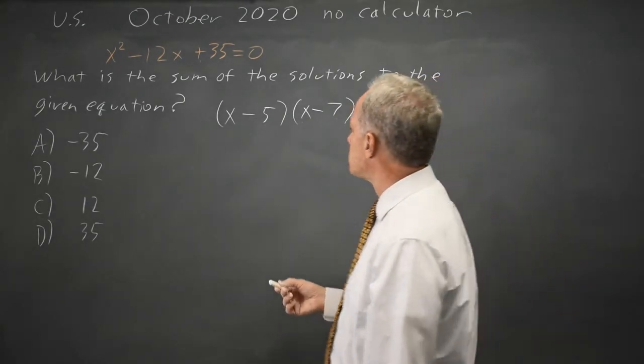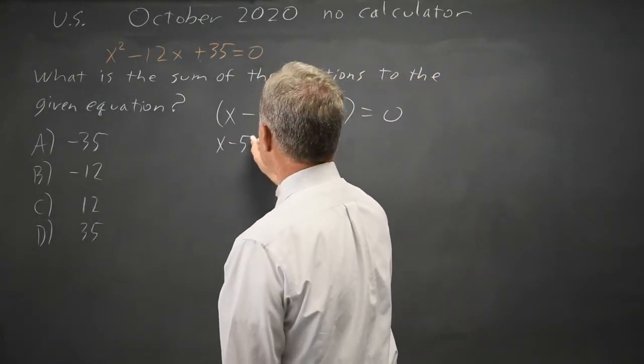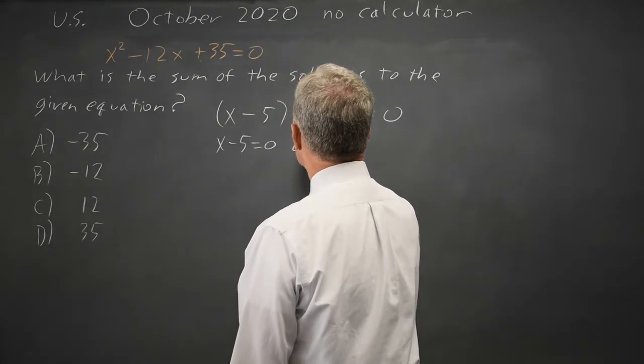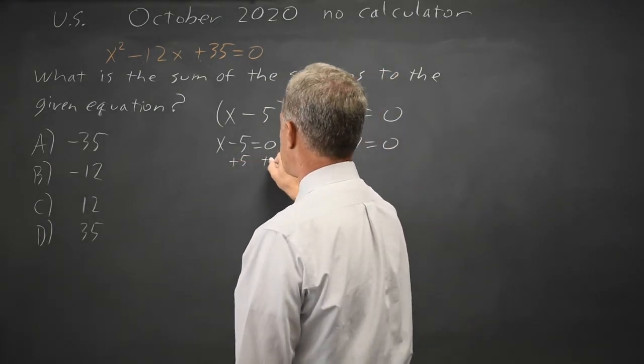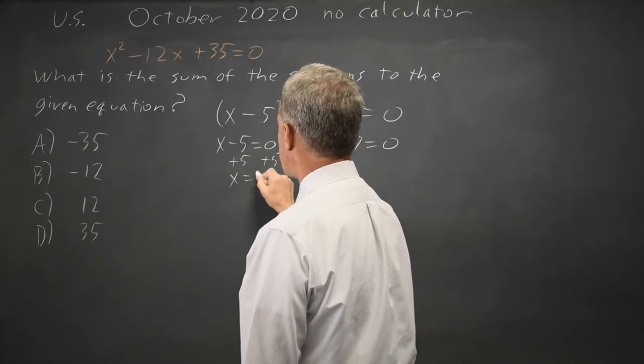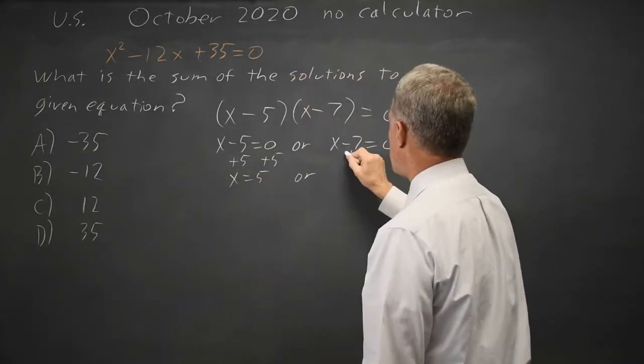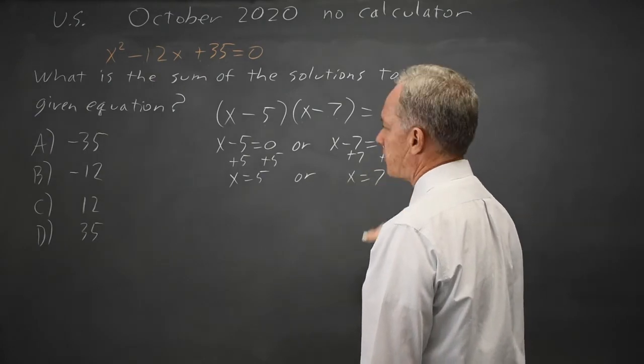I have a product that equals zero, so either the first factor is zero or the second factor is zero. Adding 5 to both sides of the first equation, x equals 5, or adding 7 to the second equation, x equals 7.